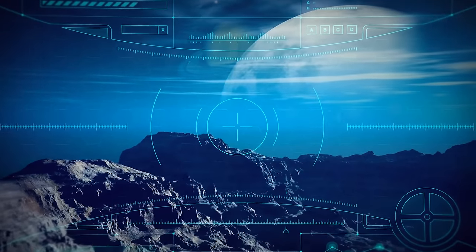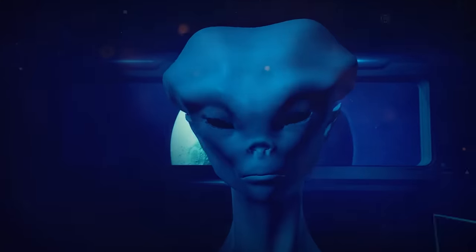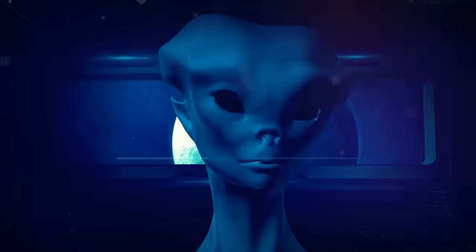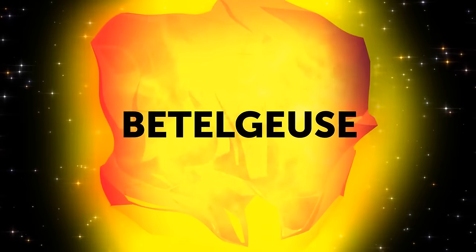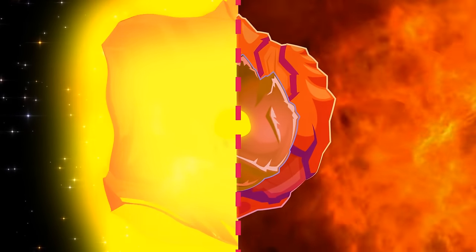In case the sun knocks us off our rotation, the results would be different. It'll also get hot, because the magnetic field around us protects us from the sun's radiation. And once we get knocked out of place, the magnetic field gets tarnished, and the extreme heat from the sun will boil us.